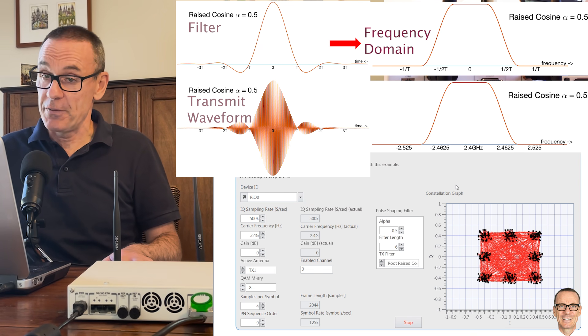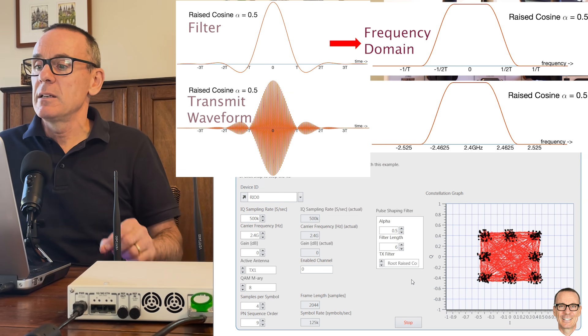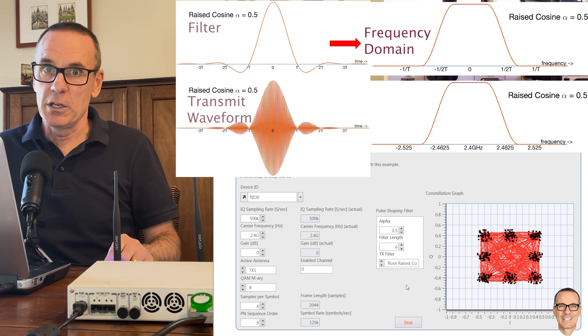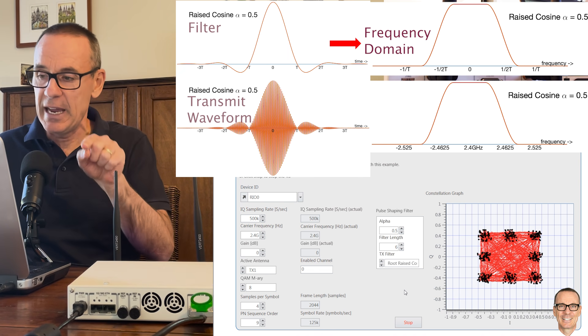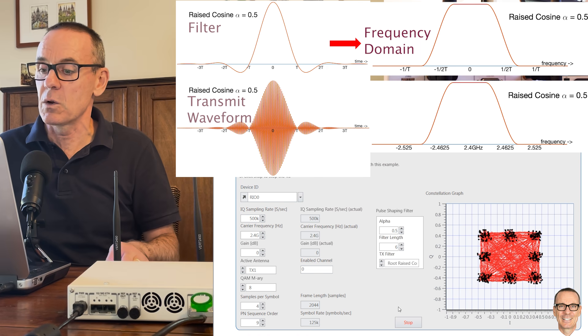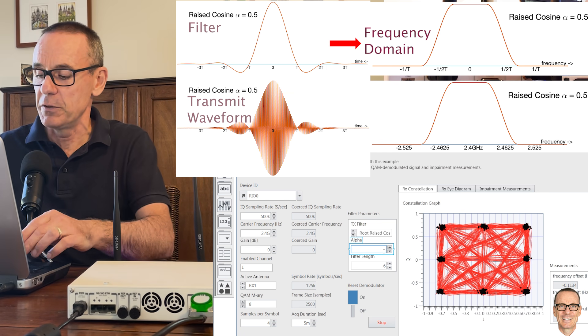And here's the constellation at the transmitter for 0.5. Interestingly at the transmitter these root raised cosine filters are causing the dispersion of the actual points which is interesting. Of course as I said it really matters once it's gone through the receive filter as well as the transmit filter.